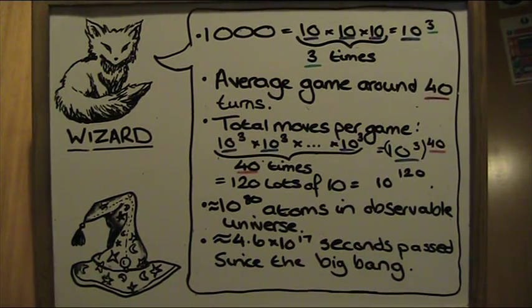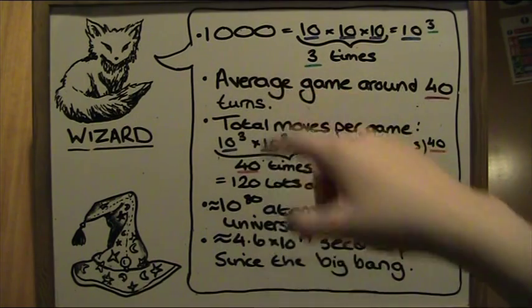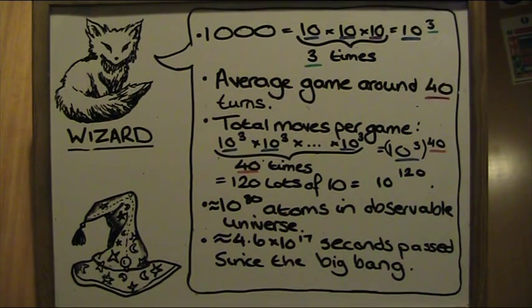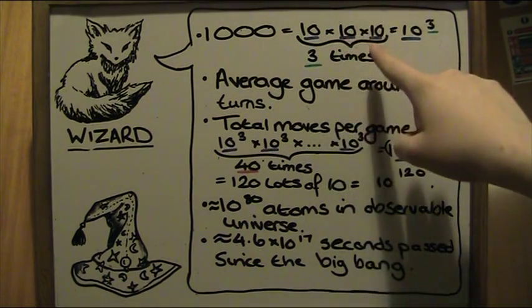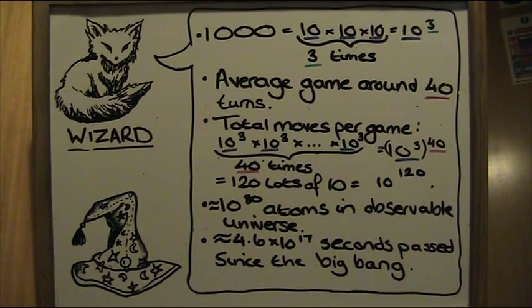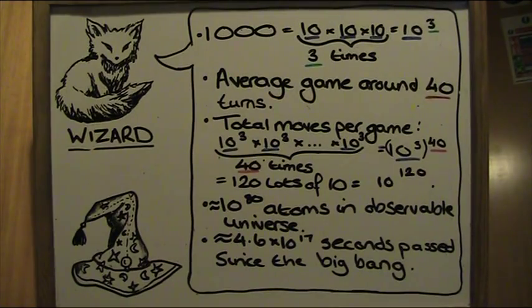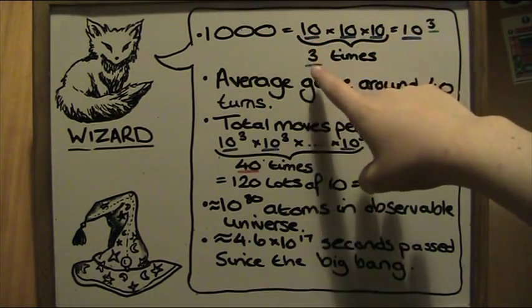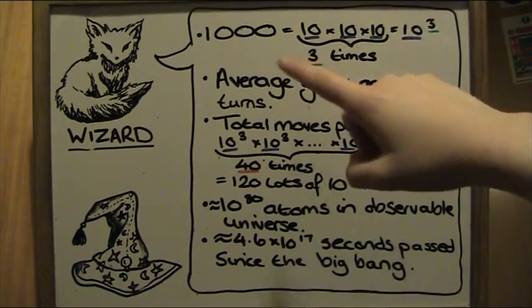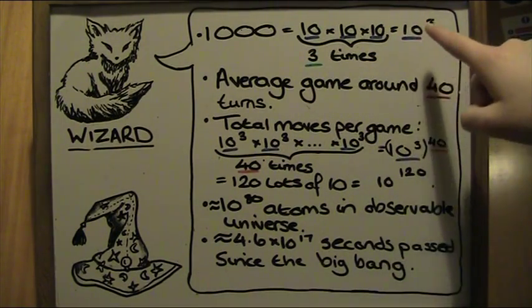Let's take a look at what Wizard says. Wizard is saying that there are about a thousand different ways of white and then black playing per turn. Notice that we can split a thousand into ten times ten times ten. We can use powers, which is when a number is multiplied by itself however many times. So we can see ten is multiplied by itself three times. So we can also write this as ten to the power of three.